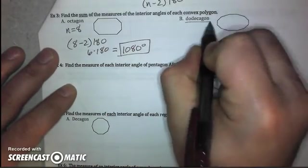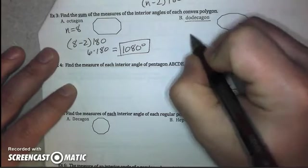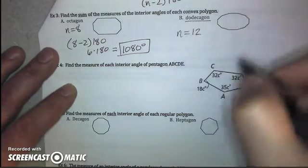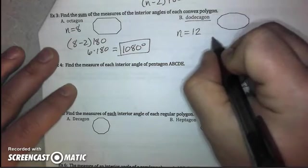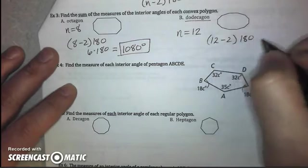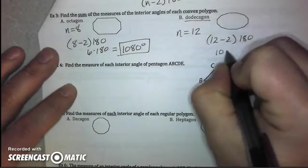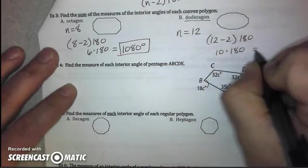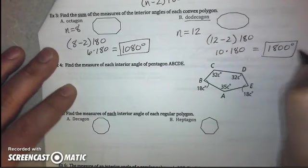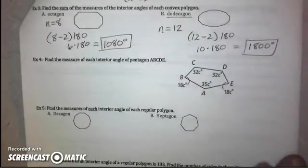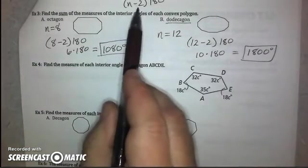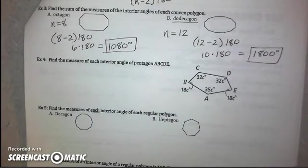And a dodecagon, remember dodecagon is the prefix indicating that our polygon has 12 sides. So, we simply do 12 minus 2 times 180. 12 minus 2 is 10, which would give us 1,800 degrees for that total. So, to find the total of all the angle measures, you just take the number of sides and subtract 2, and then multiply by 180 degrees.